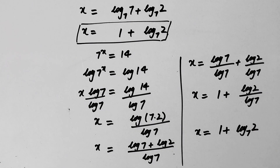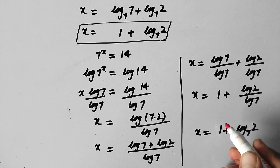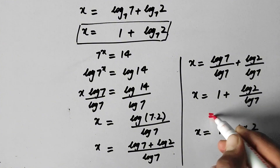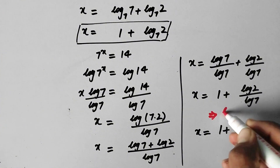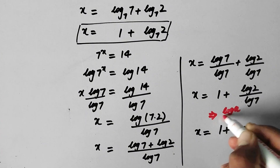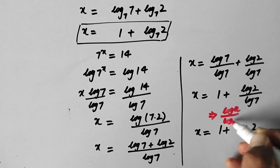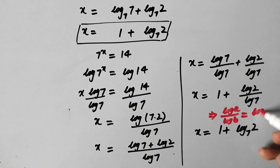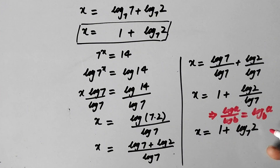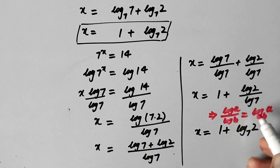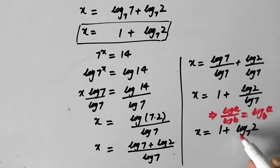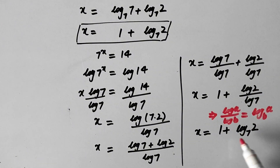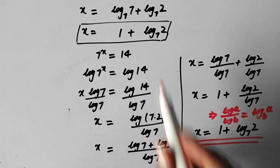We can write this in another form by following the change-of-base property of log, which states that log of b over log of a is equal to log base a of b. So according to this property, x equal to 1 plus log of 2 over log of 7 can be written as x equal to 1 plus log base 7 of 2. And this is the same value of x as obtained in Method 1. That is our final answer.